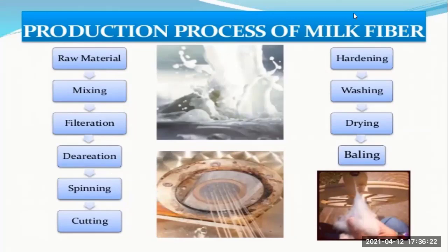Now the production process of milk fiber: acid is mixed with milk to extract the casein. Water is evaporated to form casein crystals. The casein is hydrated into a thick syrup and extruded through spinnerets. The resulting fiber is passed through a hardening bath, and finally the continuous fiber is cut to the desired length.